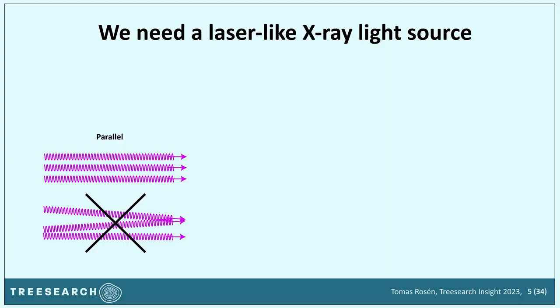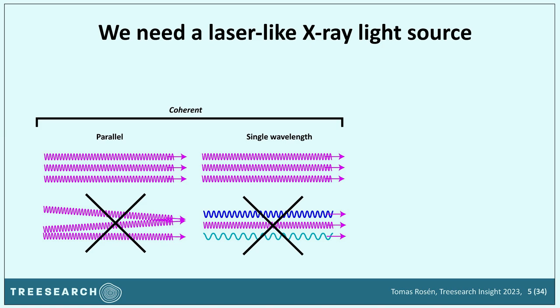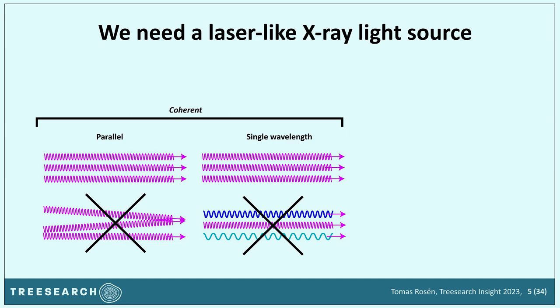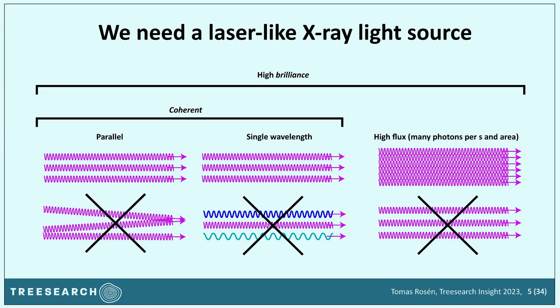You need better X-rays — almost laser-like properties. You want highly parallel X-rays at a single wavelength, not a mixture of colors. If you achieve those properties — parallel and single wavelength — you are said to have coherent light. And if you also get a lot of photons per second per area, then you have a very intense source with high brilliance. Standard definition also includes a very small source size.